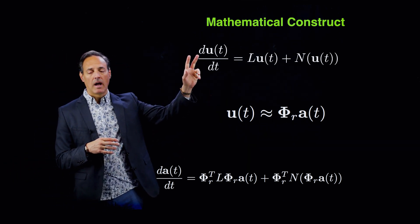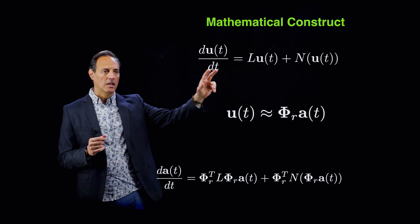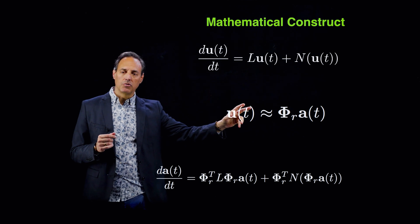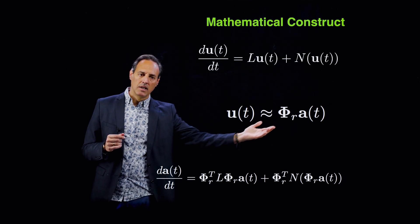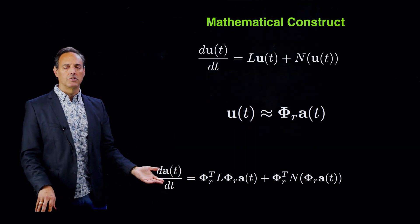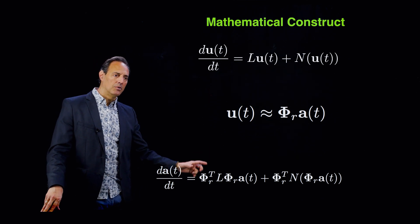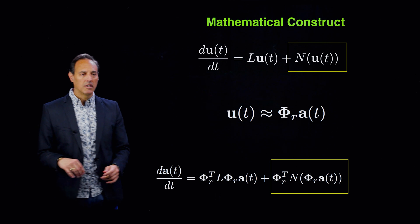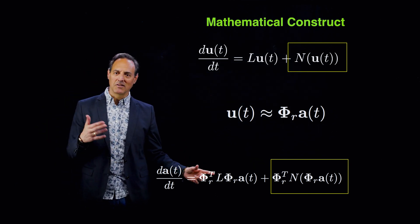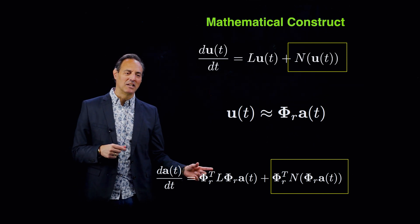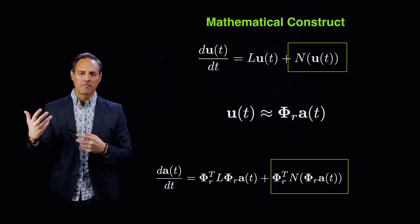You have the high-dimensional system that you want to approximate by a low-dimensional system. You project using your SVD modes or POD modes onto some subspace Φ_R, and here are the evolution equations for what the SVD modes are doing in time. Everything can be easily computed except for the nonlinear term. The linear term can be pre-computed as an R×R matrix — you do that once upfront.